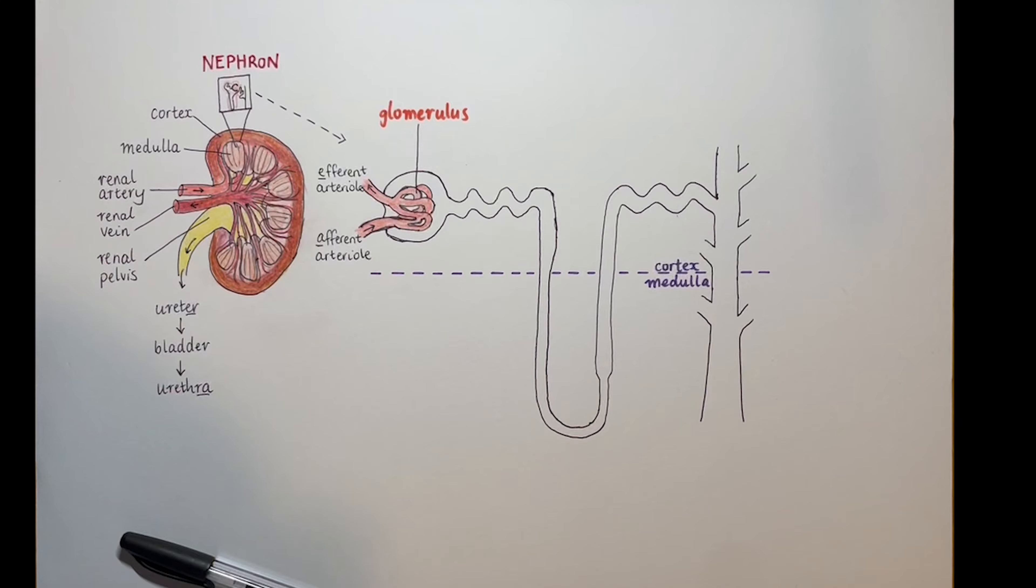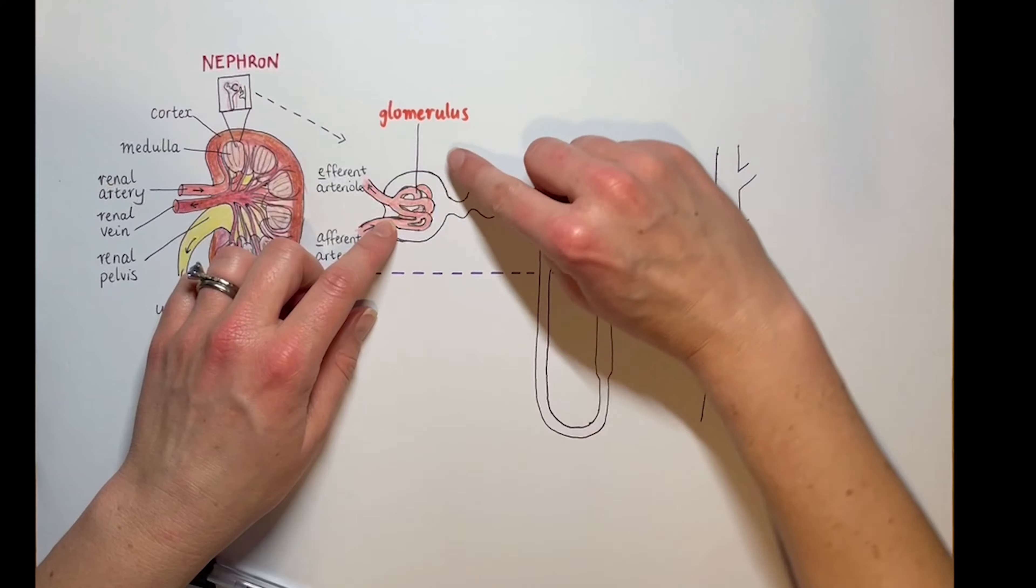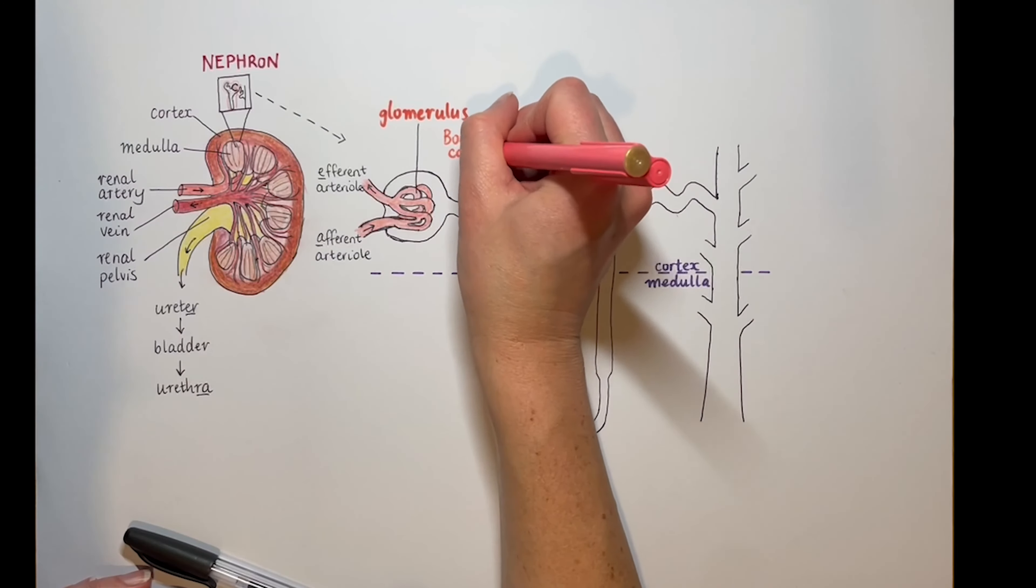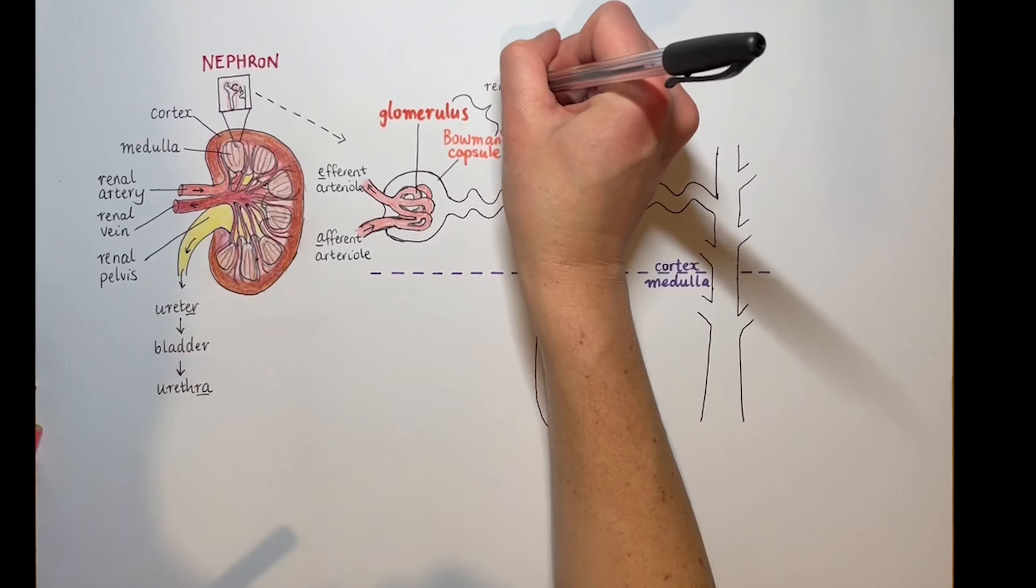Surrounding the glomerulus is the Bowman's capsule. Together, the glomerulus and the Bowman's capsule comprise the renal corpuscle.